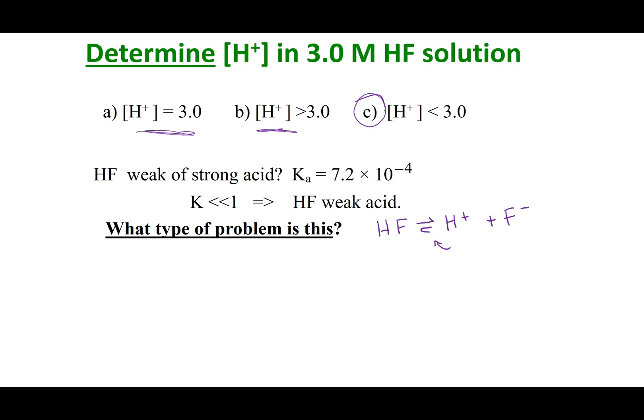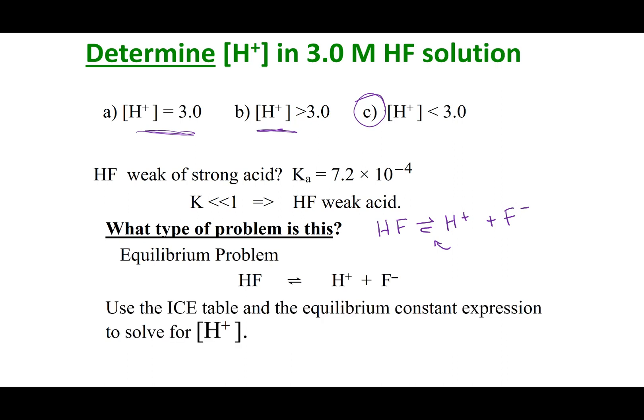We have to ask ourselves, if we want to figure out the H-plus concentration, what type of problem is this? Remember in our last slide, we said hard arrow meant stoichiometry. If we have an equilibrium arrow, we just learned in Chapter 6 that this requires an ice table.